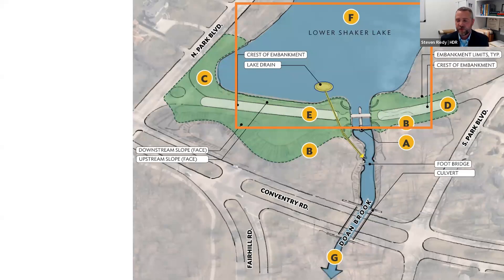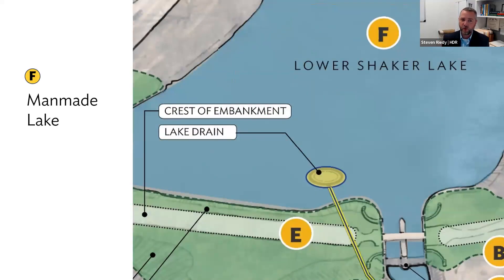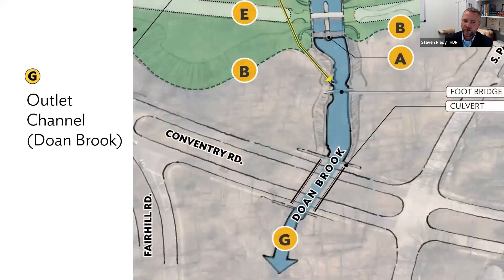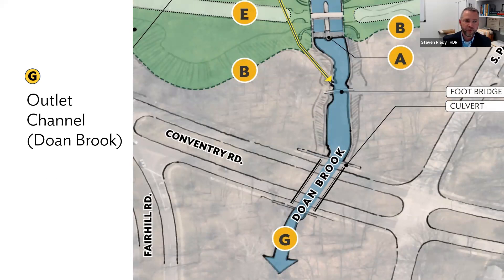The impoundment created by the dam is known as Lower Shaker Lake, with a surface area of approximately 17 acres. This impoundment creates passive storage below normal pool level, and also active storage that helps mitigate downstream flooding during storm events. The outlet channel downstream of the spillway is Domebrook; flows travel downstream across Coventry Road toward University Circle. There is also a prominent stone footbridge just downstream of the spillway between the spillway and Coventry Road.